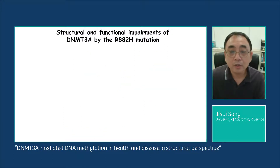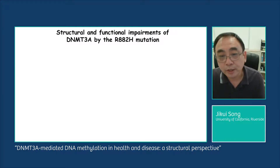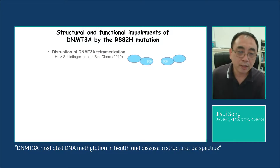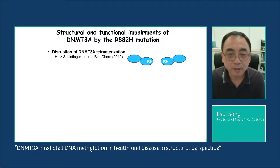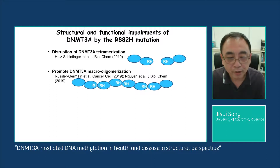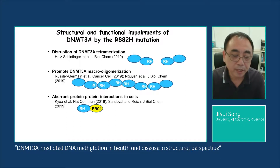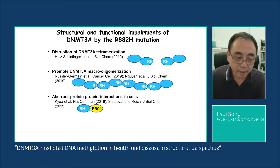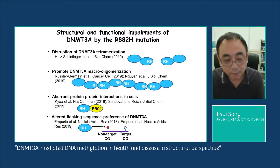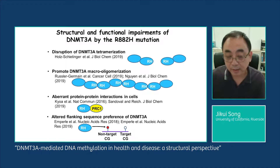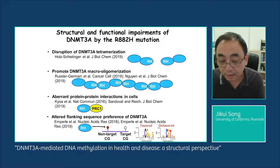Now let's look at how the R882H mutation affects the function of DNMT3A. Several models have been proposed for its functional consequences, including disruption of DNMT3A tetramerization, promotion of oligomerization, and introduction of aberrant protein interactions in cells. More recently, it has been shown that this mutation leads to altered flanking sequence preference of DNMT3A, resulting in more methylation at non-target CpG sites. Unlike wild-type DNMT3A, which favors cytosine and thymine at the plus-one site, this mutant favors guanine and adenosine as the plus-one site.